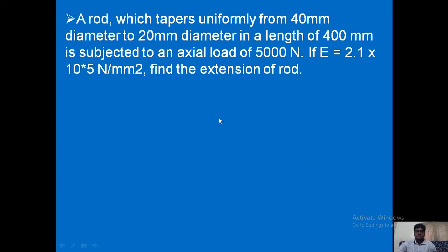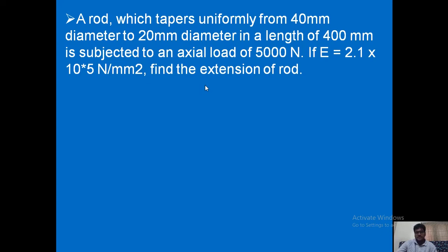The given values are: diameter D1 = 40 mm, diameter D2 = 20 mm, length of rod L = 400 mm, axial load P = 5000 Newton, and Young's modulus E = 2.1 × 10⁵ N/mm². The question asks us to find the extension of the rod, dL, using the formula dL = 4PL / (π·E·D1·D2).